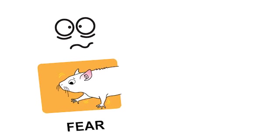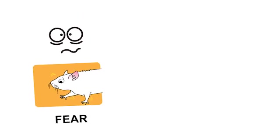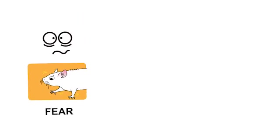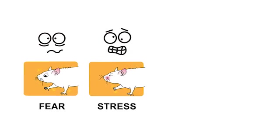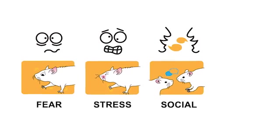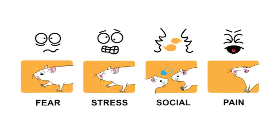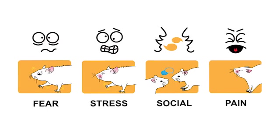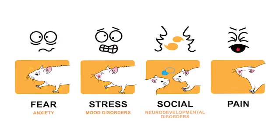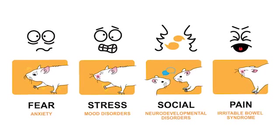However, the amygdala is much more than just a fear center. It also makes functional contributions to the regulation of stress, social behaviors, and the affective dimensions of pain perception. When the amygdala is not functioning well, it can contribute to a range of problems including many psychological disorders related to these behaviors.